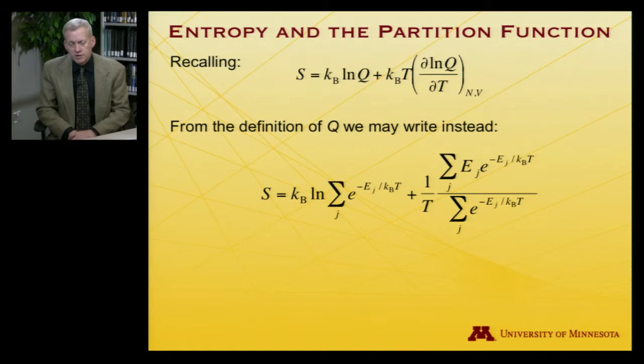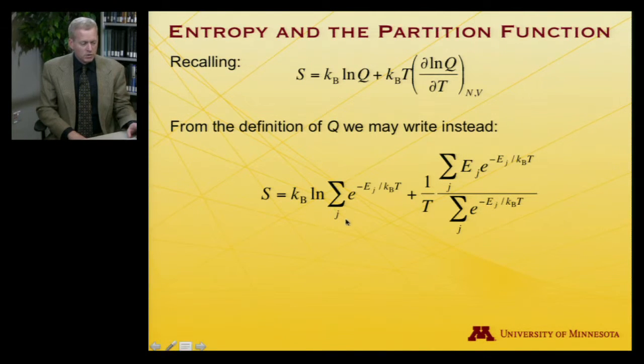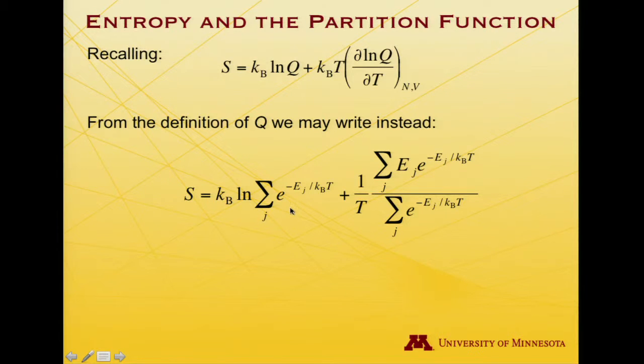And now let's actually expand Q and remember what the partition function is. It's the sum over all states exponential minus the energy of that state divided by Boltzmann's constant times temperature. So I've swapped that in for Q here in the first term and I've swapped it in for the partial log of Q. I've actually carried out the differentiation and so I get a 1 over T term and I get this expression.